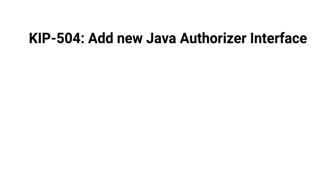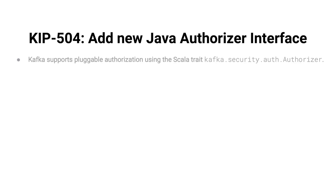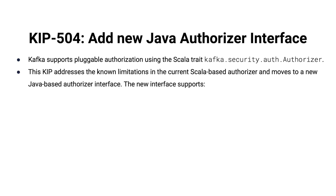KIP 504 adds a new Java authorizer interface. As you may know, Kafka was originally written in Scala, and the default client libraries on the outer surface that developers see were also Scala libraries — not true anymore; it really is a Java program and all the APIs on the outside are Java also. Kafka has always supported pluggable authorizers using a Scala trait called Kafka Security Authorizer. KIP 50 tried to replace that with a Java interface, was accepted but never merged. So KIP 504 finally replaces the Scala trait — it's still there, but now adds the option to do this with a Java interface, making the API more compatible with the way most people are writing Kafka programs.